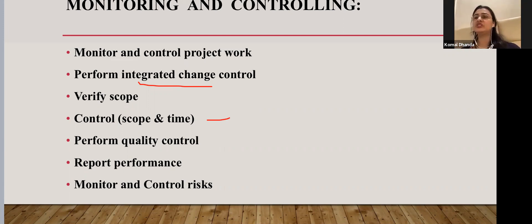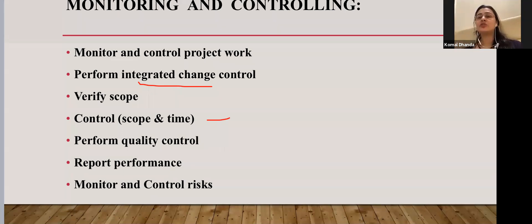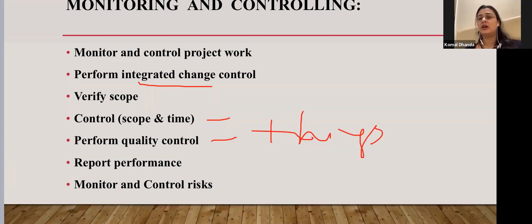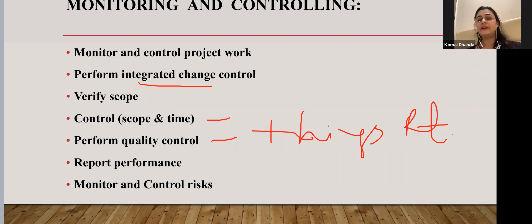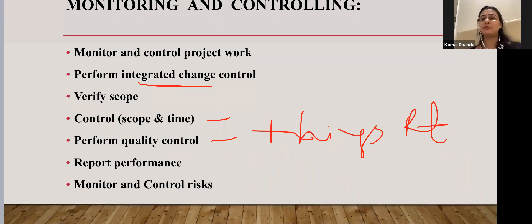Performing quality control means — whereas in project execution we focused on quality assurance — here in monitoring and control we focus on: are we doing things right? It focuses on verifying the scope and moving towards acceptance, because if we are doing things right, it will naturally lead us towards acceptance.